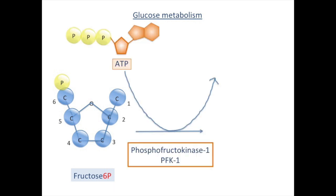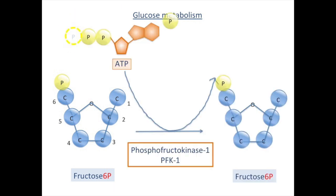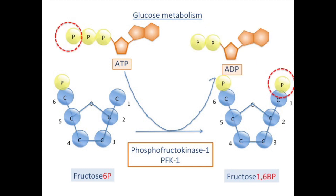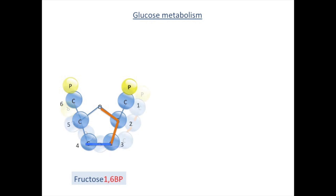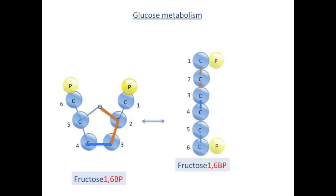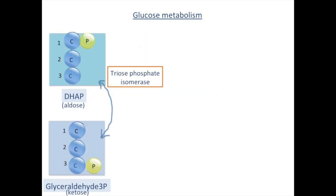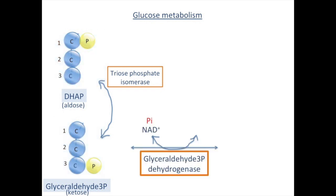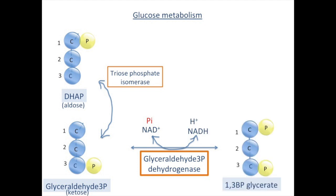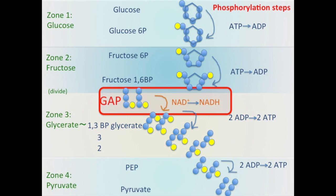Fructose-6-phosphate gets an additional phosphate group from ATP. Now two phosphate groups and six carbons divide into two pieces equally. G3P is oxidized by NAD and gets an additional phosphate group from inorganic phosphate. This is the only phosphorylation reaction in glycolysis where ATP or ADP are not used.